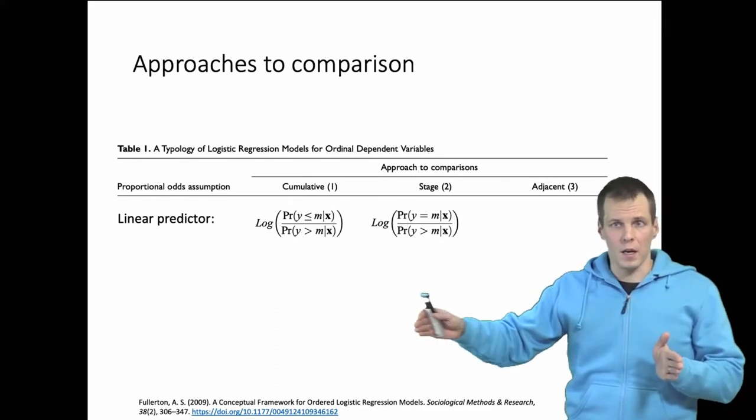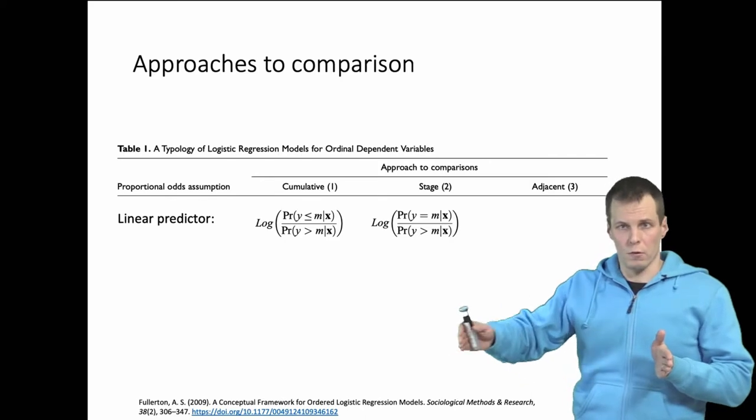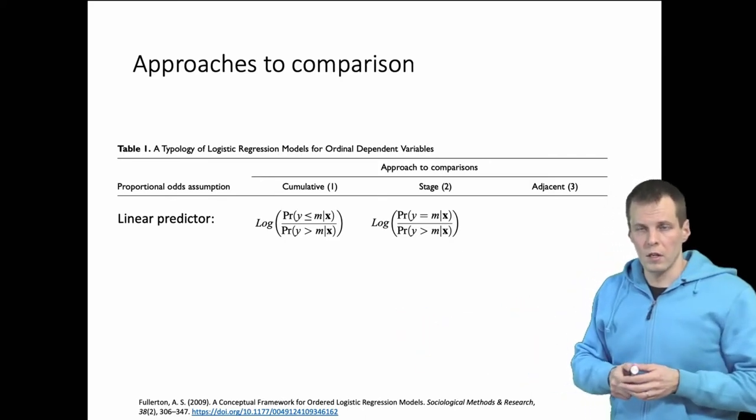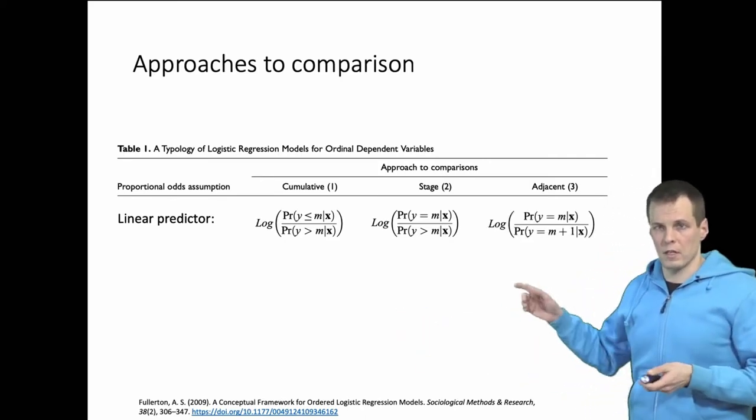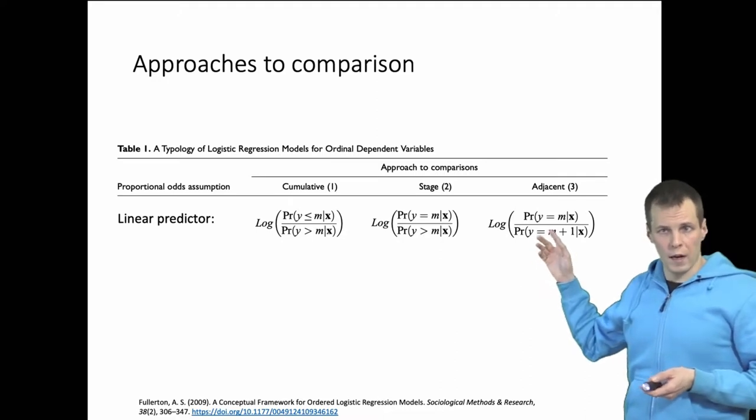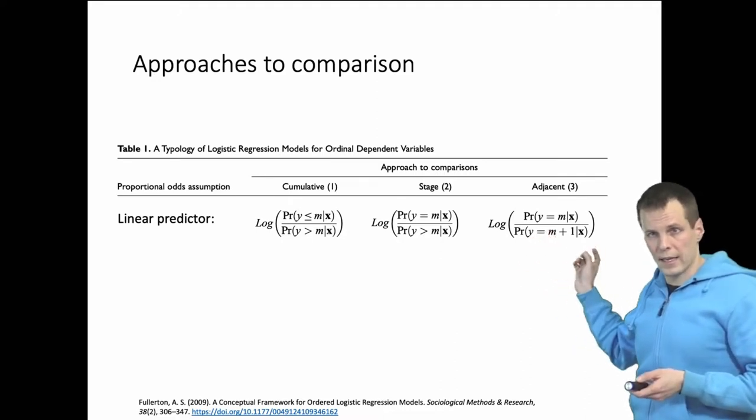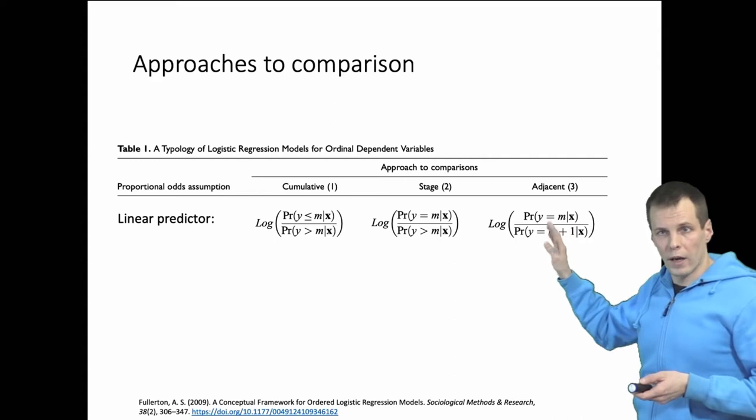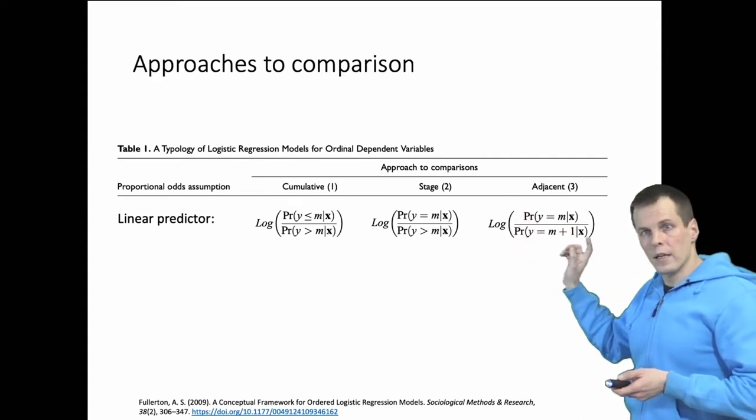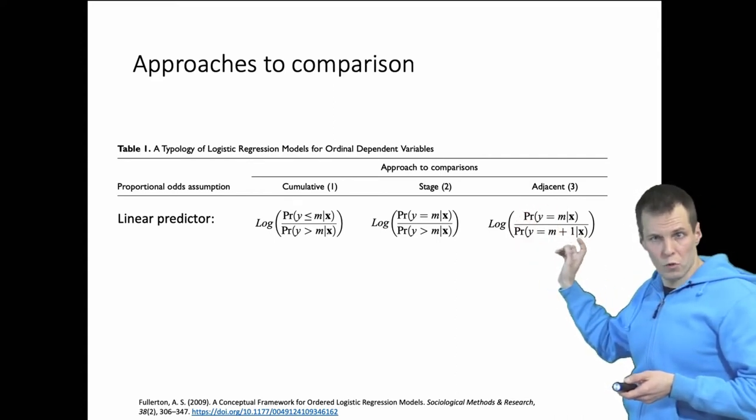So this is a kind of model that tries to explain how you continue following through stages. Then the adjacent comparison is comparing one category against another one exactly. It's an exact comparison between two categories.